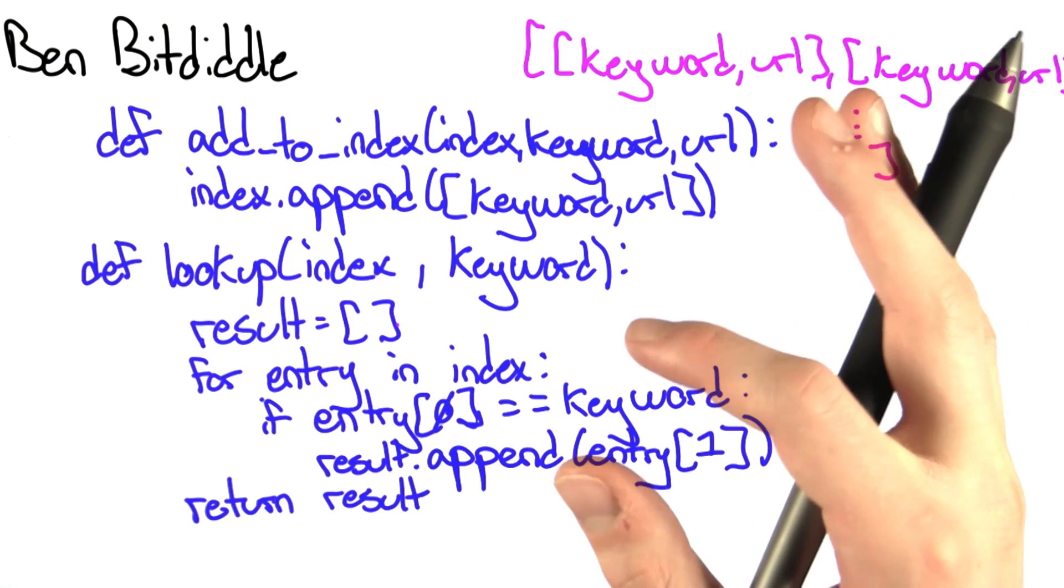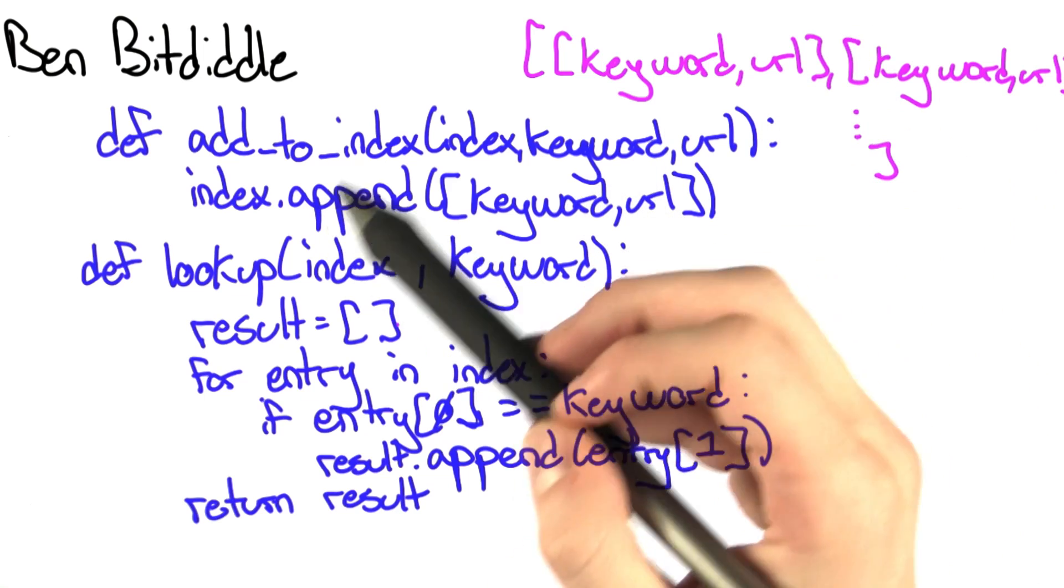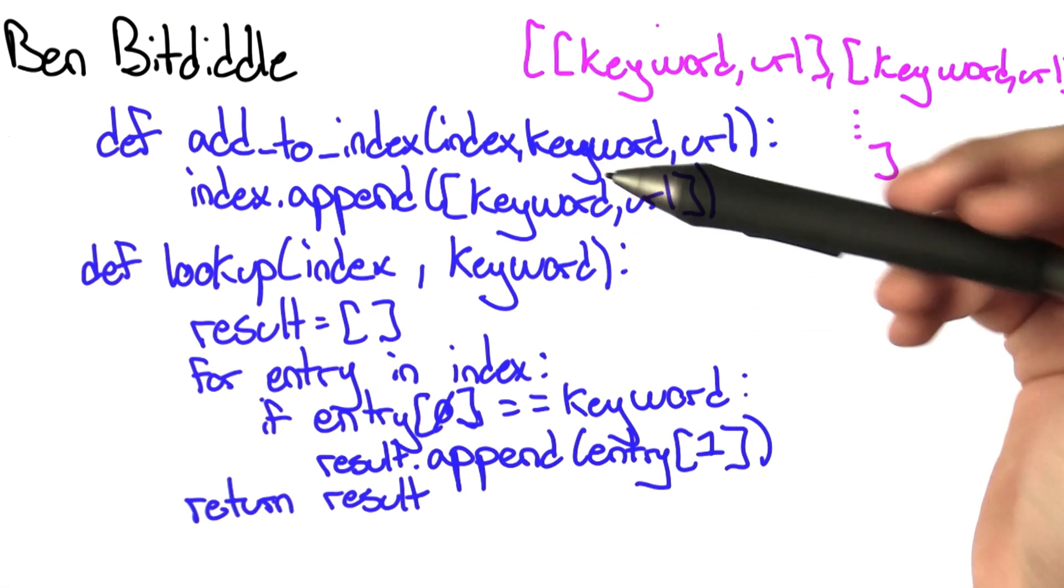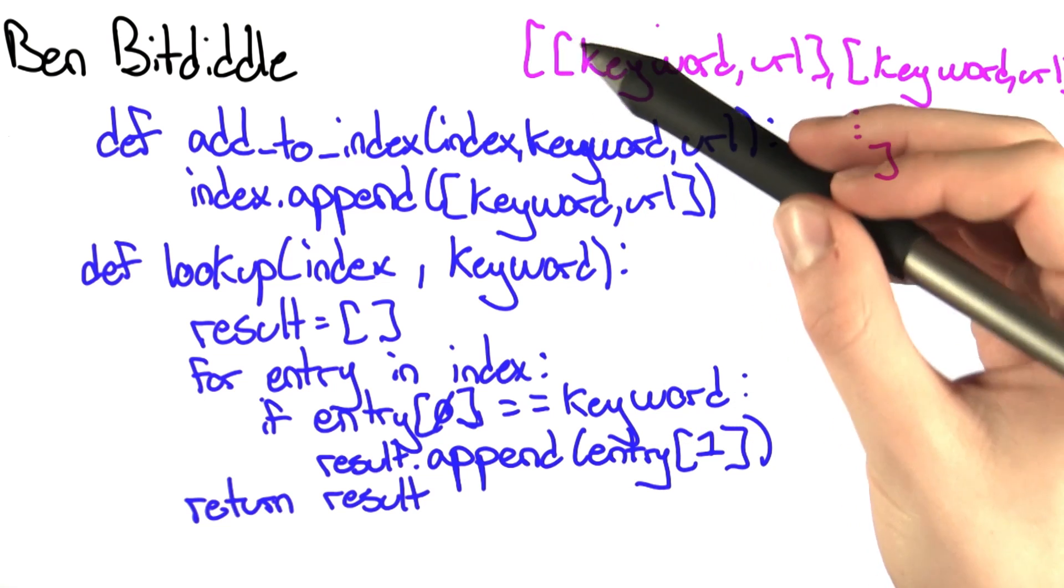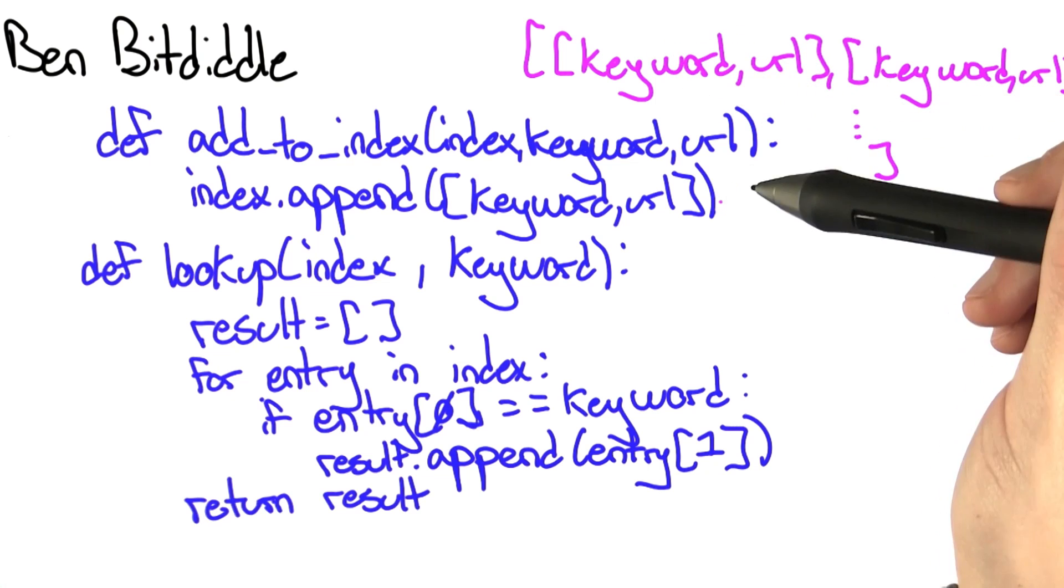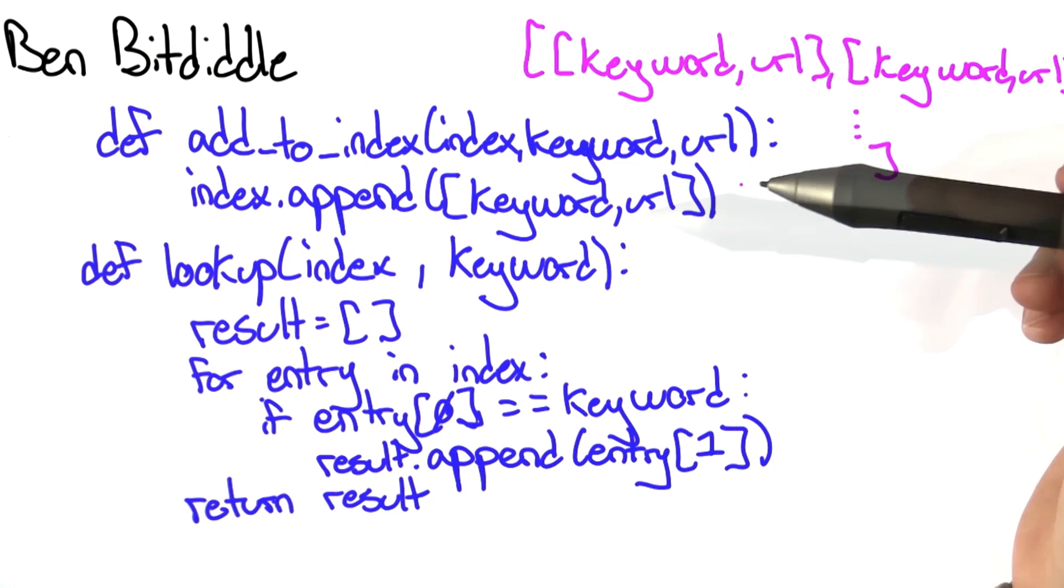But now we must ask ourselves, how does this new code affect the runtime, the speed at which addToIndex and lookup run? Before, addToIndex had to go through perhaps the entire index, looking for the entry that corresponded to the keyword. But in this code, all it has to do is append the new keyword and URL to the end. This is faster than searching through the index.